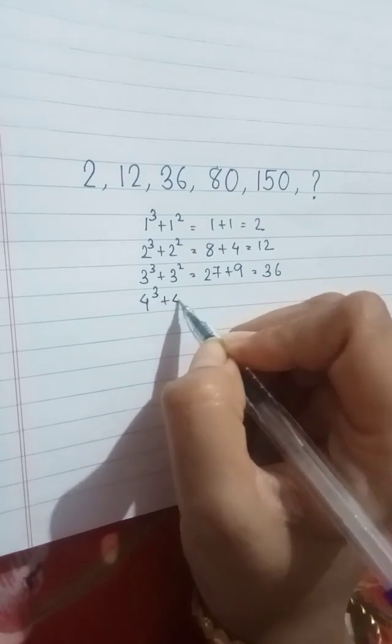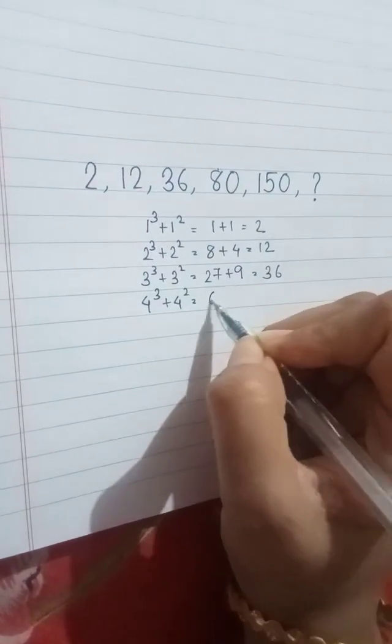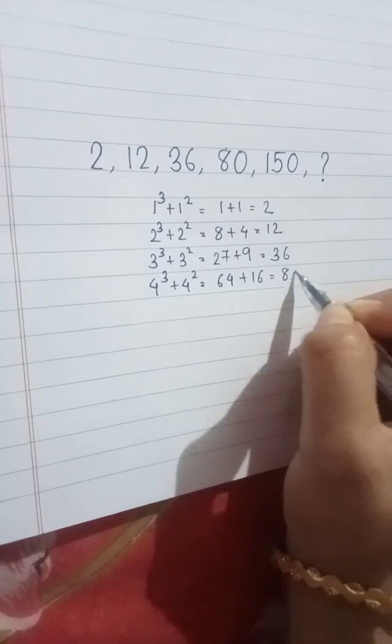4 cube plus 4 square. We get 64 plus 16 that is 80.